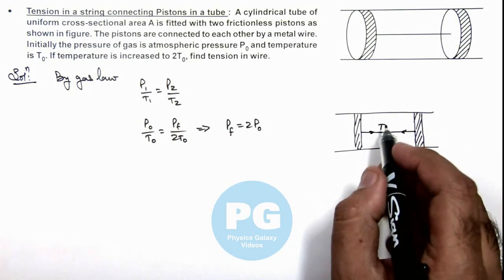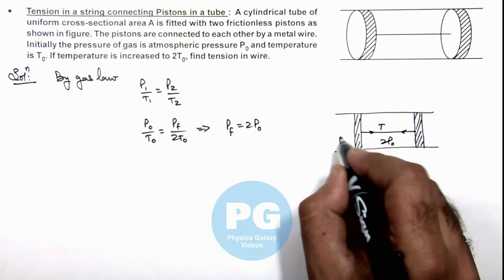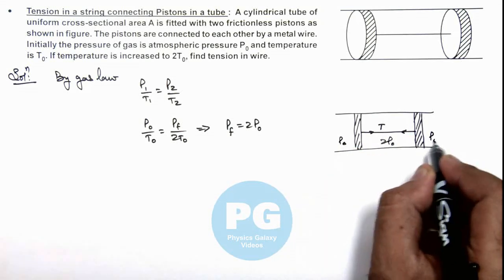This is because the pressure is 2P₀ and outside pressure is P₀, so both the pistons are pushed away